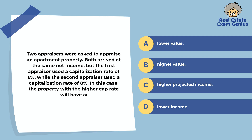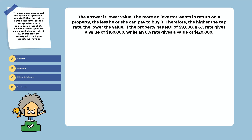Two appraisers were asked to appraise an apartment property. Both arrived at the same net income, but the first appraiser used a capitalization rate of 6%, while the second used 8%. The property with the higher cap rate will have a: lower value, higher value, higher projected income, or lower income. The answer is a lower value. The more an investor wants in return on a property, the less she can pay to buy it. Therefore, the higher the cap rate, the lower the value. If the NOI is $9,600, a 6% rate gives a value of $160,000, while an 8% rate gives a value of $120,000.